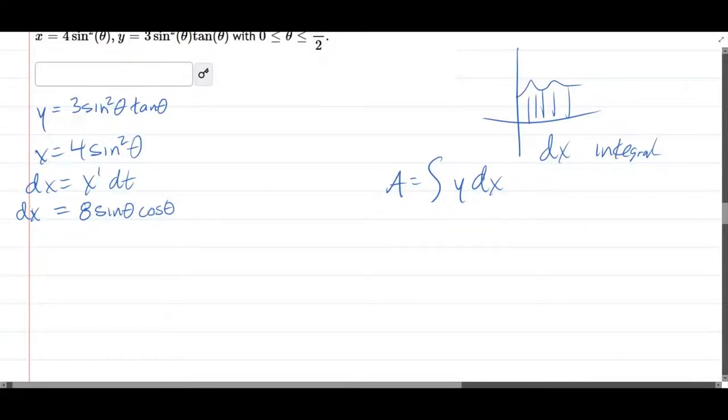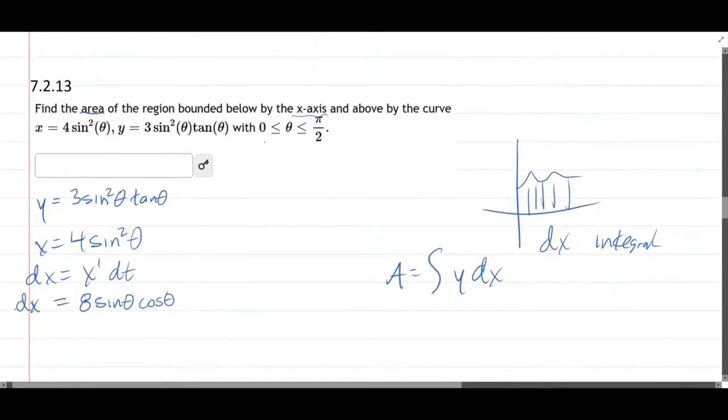And we have our theta values go from 0 to pi over 2. That was also given right there. So we're ready to write the area. 0, pi over 2, y, 3 sine squared theta tan theta. So that's all y.